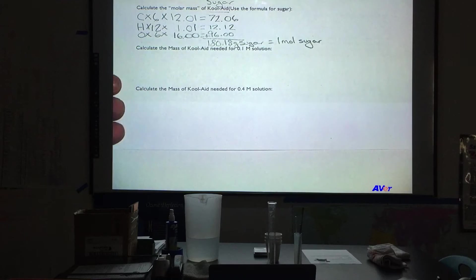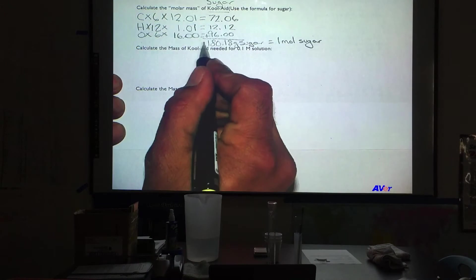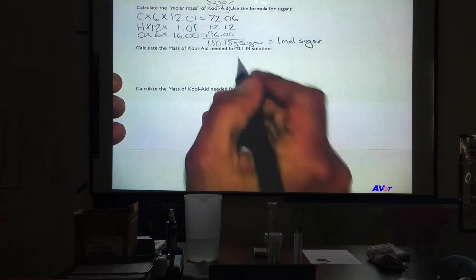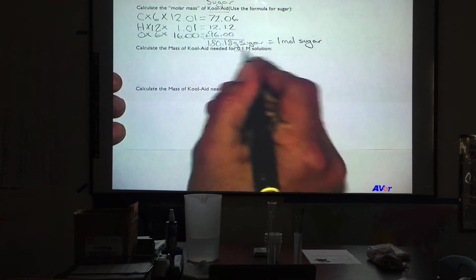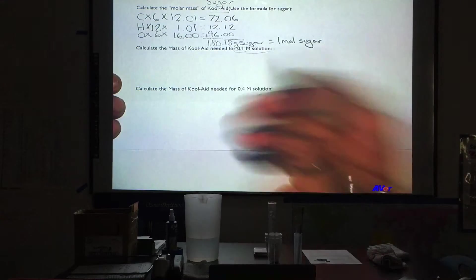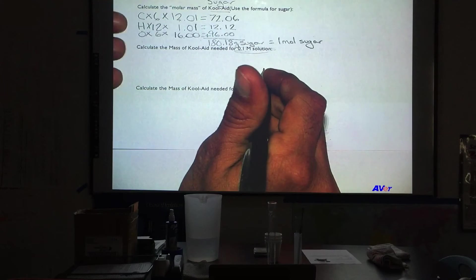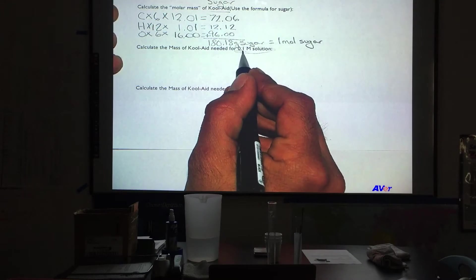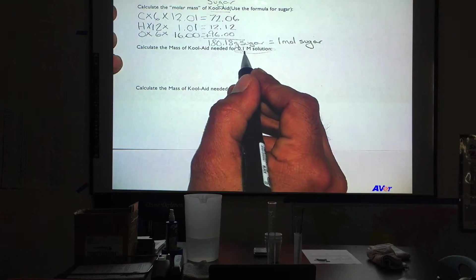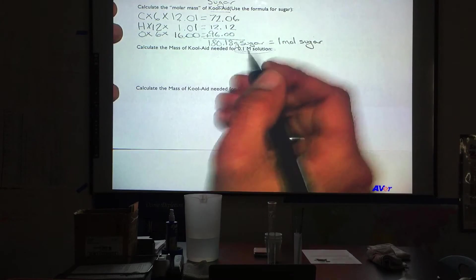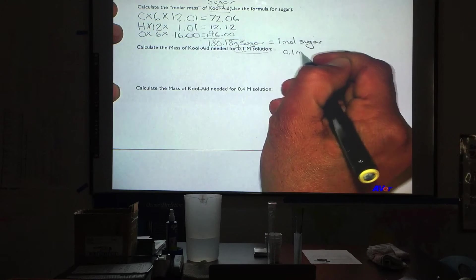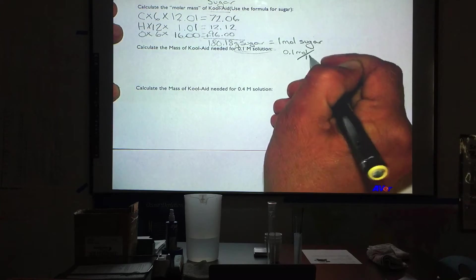In order to do this we are going to need that molar mass that we calculated and we need to figure out the mass in grams for a 0.1 molar solution. The way to do that is to convert 0.1 moles because when we are saying molarity we are looking at 0.1 moles over 1 liter.